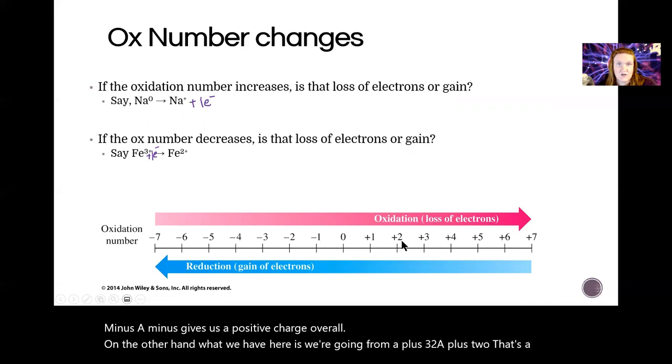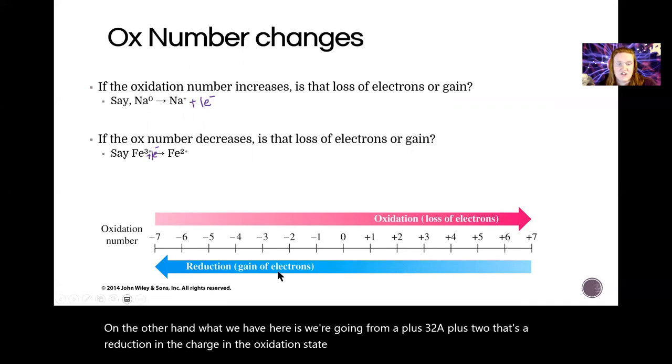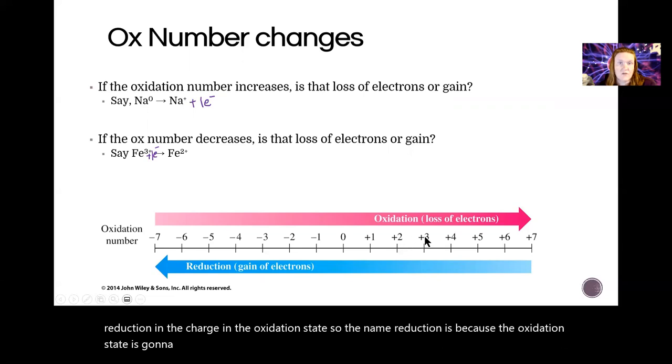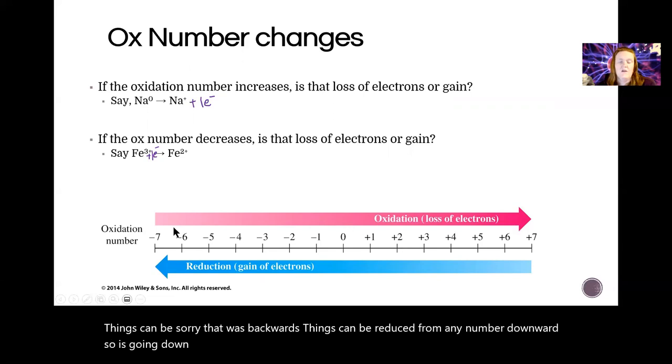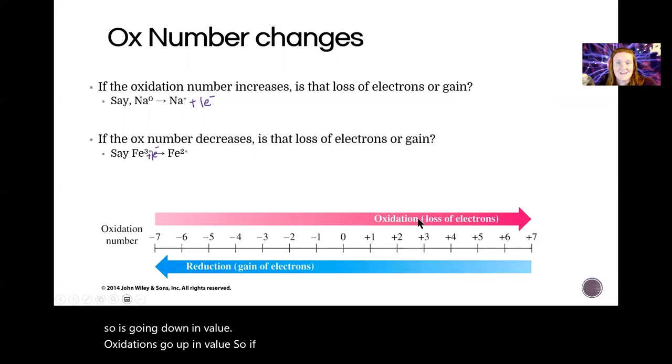The name reduction is because the oxidation state is going to go down - plus three to plus two. Things can be reduced from any number downwards, always going down in value. Oxidations go up in value. So if your charge has increased, that means your particle gave away electrons. If your charge has decreased, it absorbed them. That's because electrons are negative.